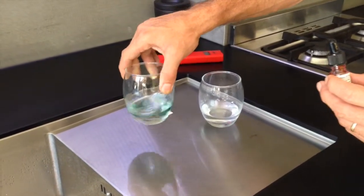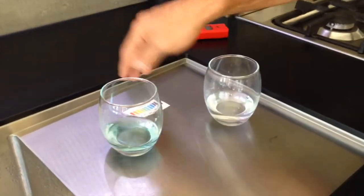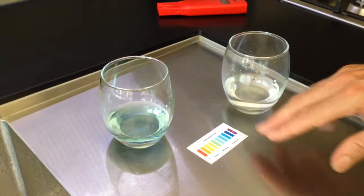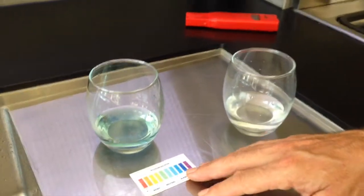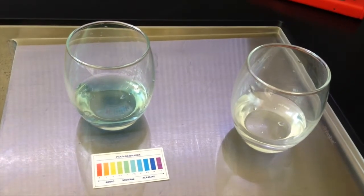That color will give you an indication of the pH of that water. You can see that the pH of the water, the color is green and it's somewhere between a 7 and a 7.5.